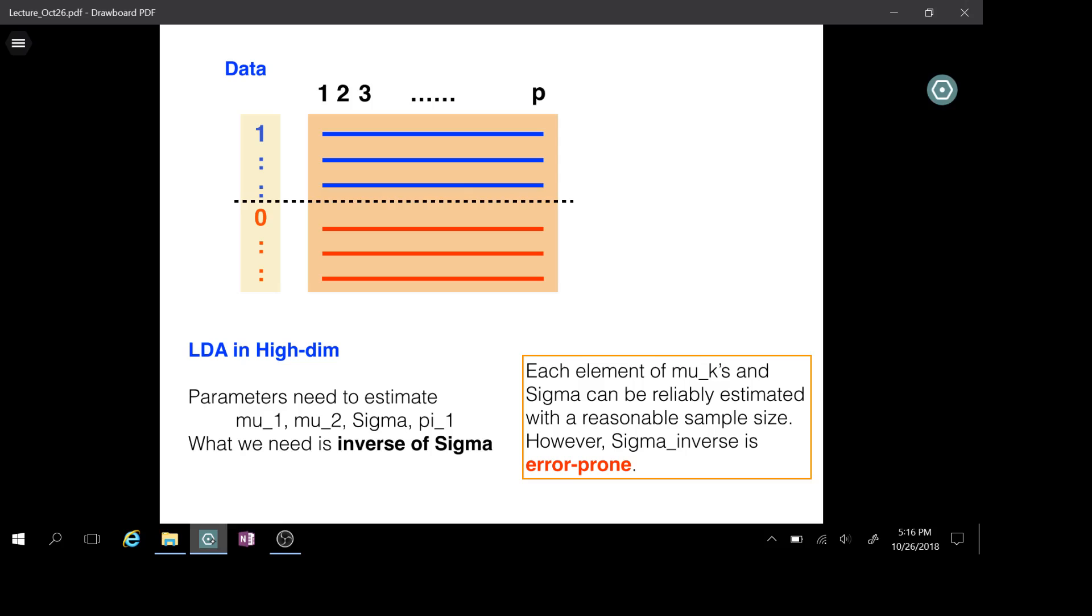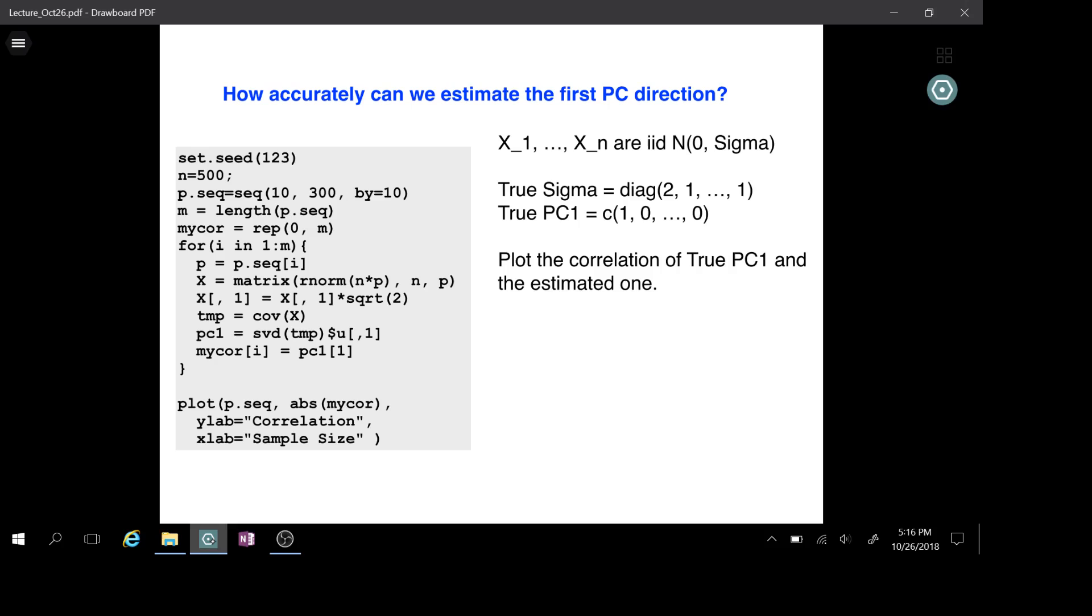However, we should be aware that although every element of sigma can be estimated reliably, because what we need in our calculation is the inverse of sigma, that part can generate a lot of errors. To understand the difficulty with the inverse, let's consider something related but slightly different.